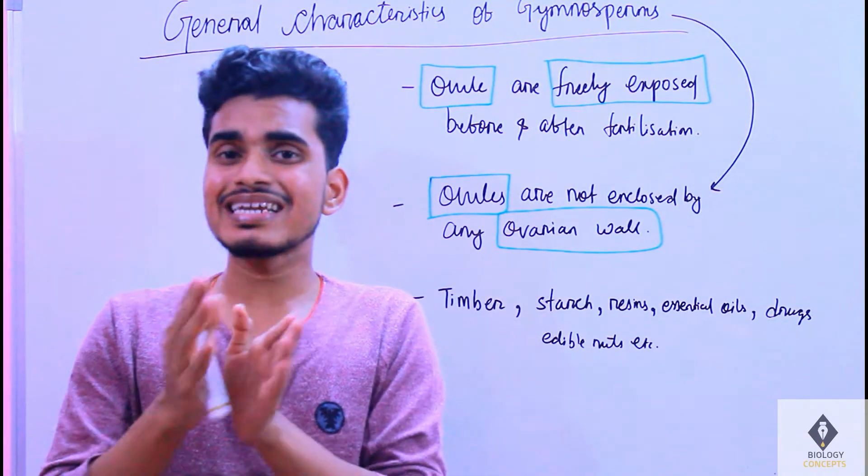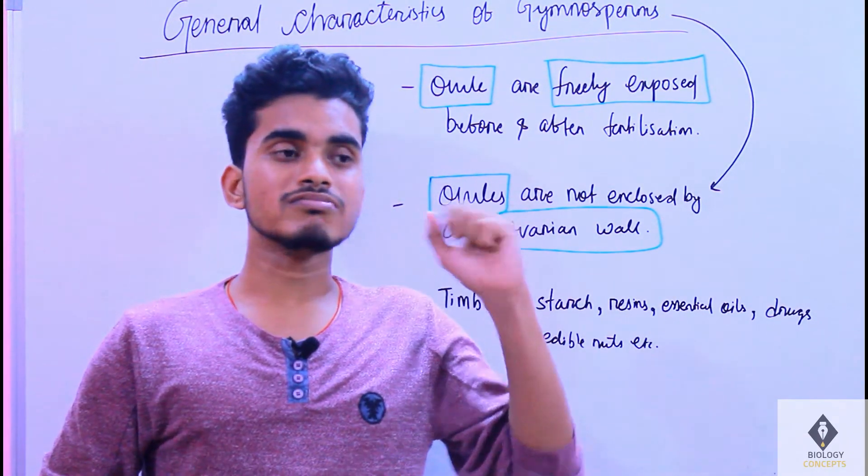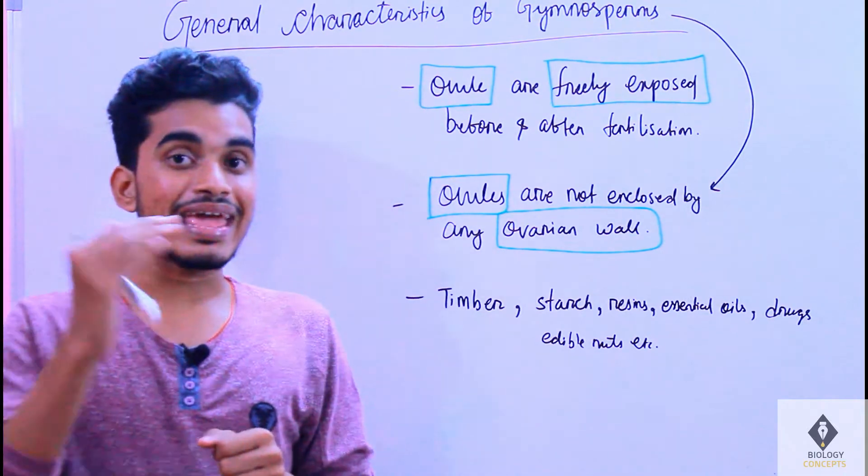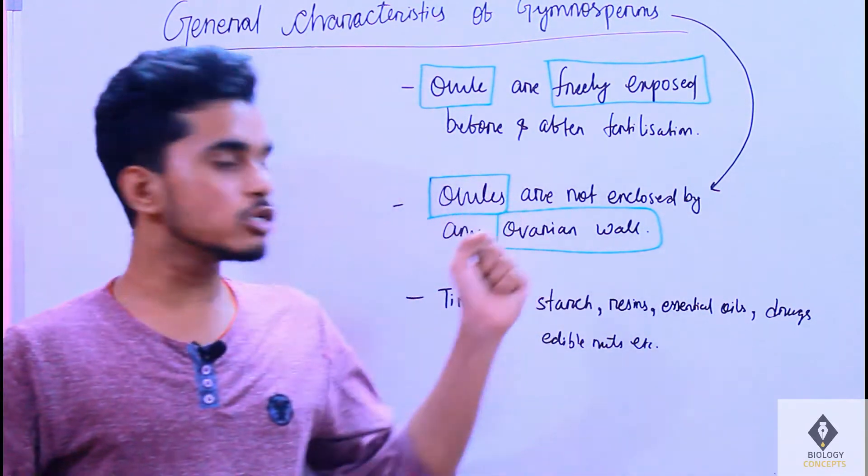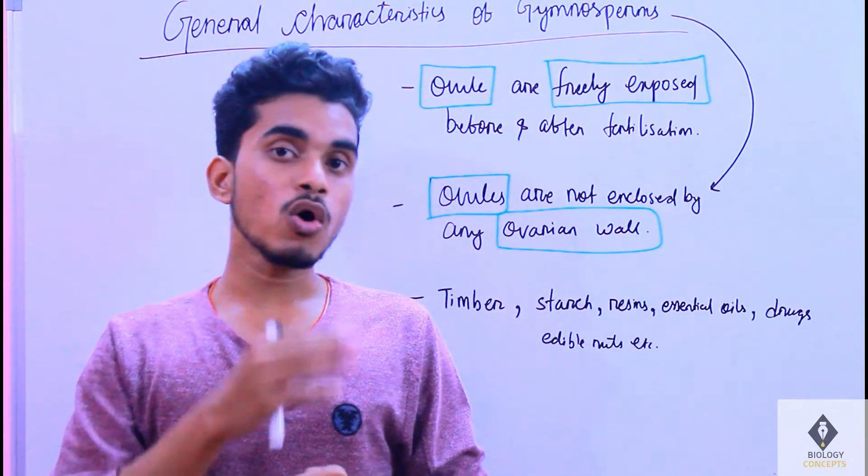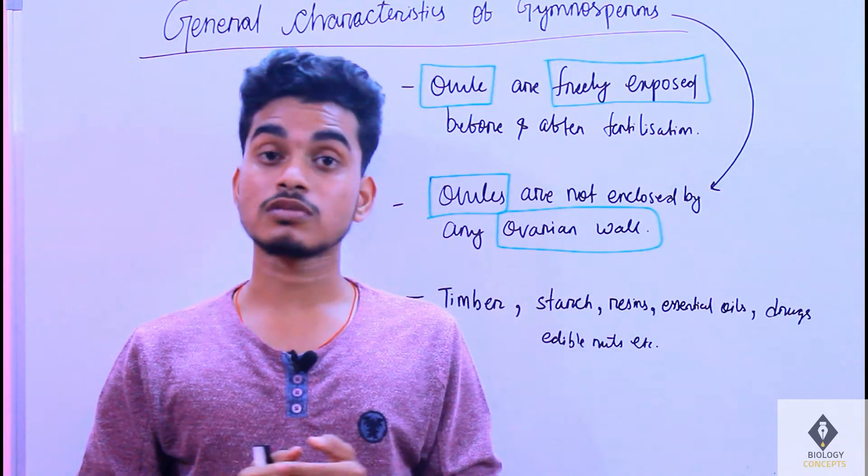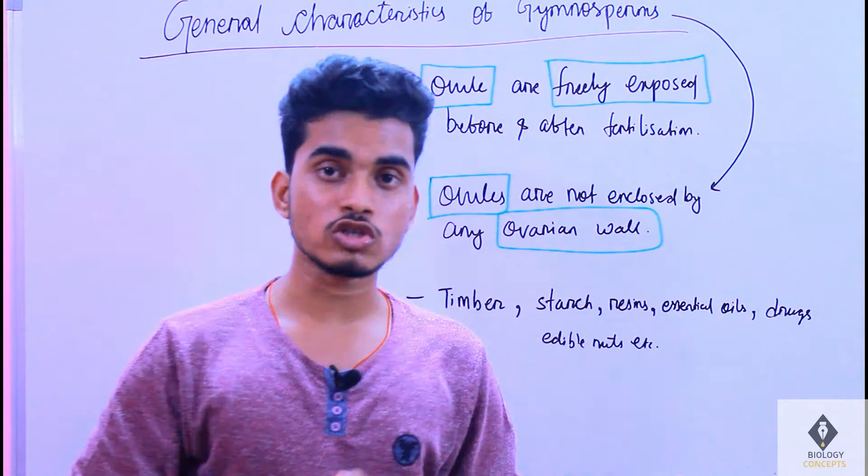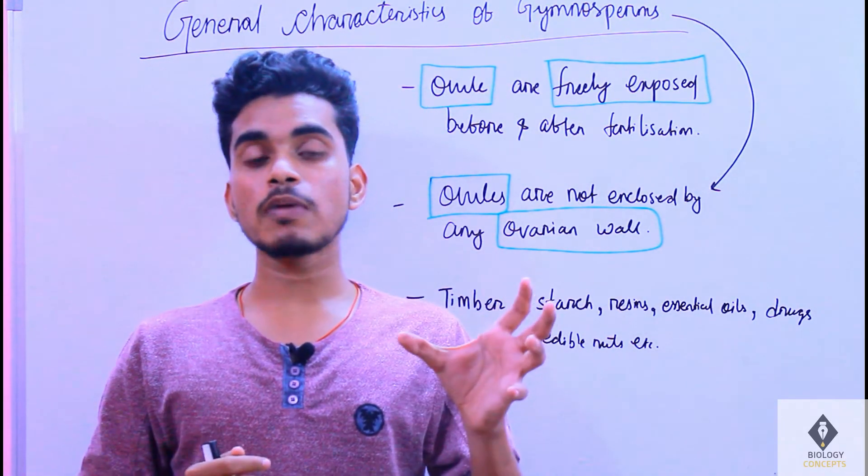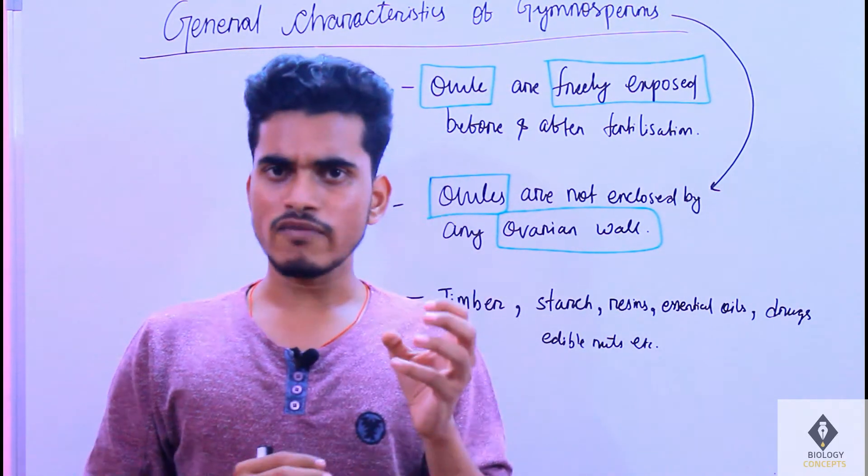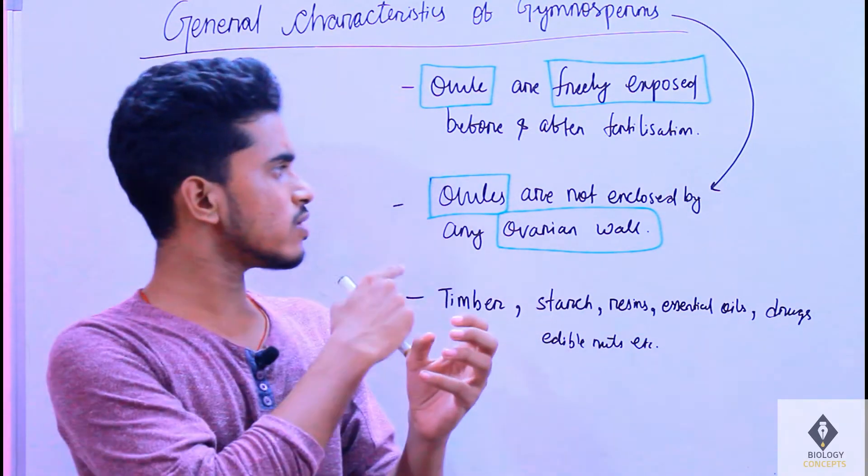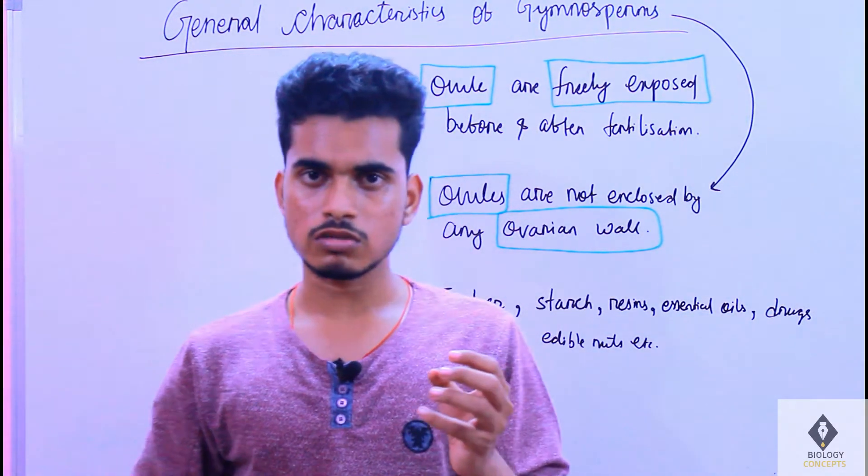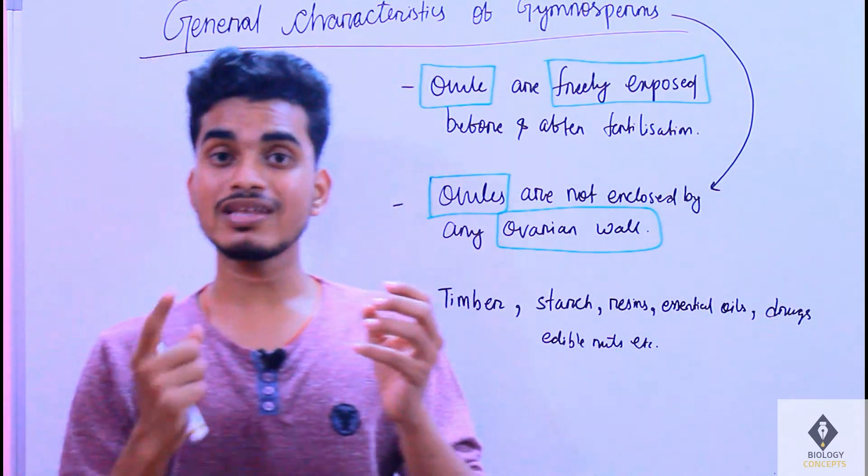These gymnosperms are considered to have naked seeds. Naked seeds in the sense these gymnosperms don't have any ovaries. That is the reason why gymnosperms are having naked seeds. If you compare with angiosperms, angiosperms have ovules. Ovules are common between angiosperms and gymnosperms.